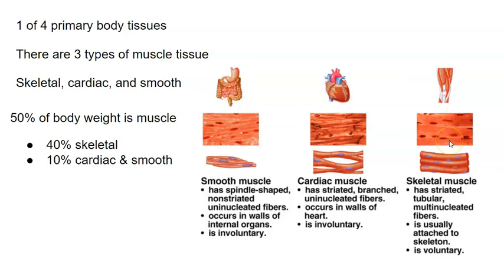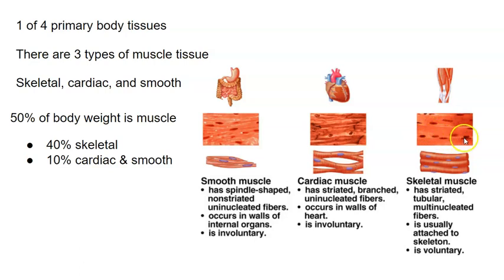Skeletal muscle has striations — you can see the muscle fibers running lengthwise with perpendicular lines across them. It has multinucleated fibers, meaning there are significantly more nuclei than cells. It's attached to the skeleton, and skeletal muscle is voluntary, meaning you have control over when those muscles contract.